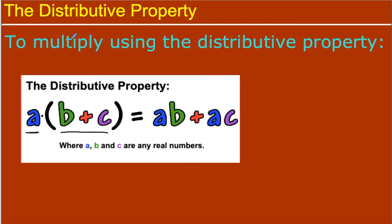The distributive property — I like to call it the distributive property of multiplication, because that's actually what you're doing. In this example, A, B, and C are real numbers, and I have this A on the outside of parentheses, which means multiply. So if I am multiplying a number to parentheses that has addition or subtraction, I have to multiply the A to the first term, B, and to the second term, C, getting AB plus AC. That's the distributive property, and it works over addition and subtraction.